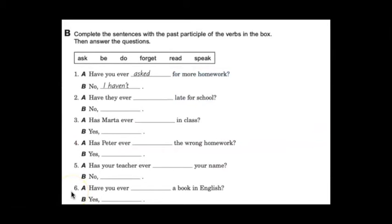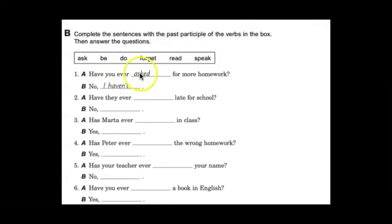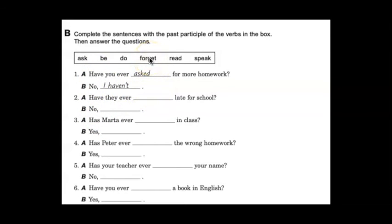Here are some more exercises to practice our present perfect tense. I want you to complete the sentences with the past participle of the verbs in the box, then answer the questions. Number one: have you ever asked for more homework? And the answer is no, I haven't. In each case the questions are going to start with have or has, then in the blank you put the past participle. Then we'll go over the answers.